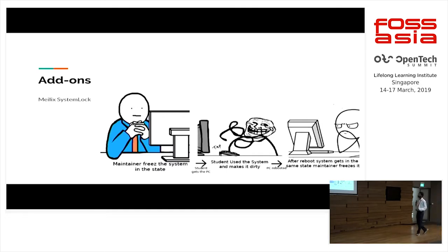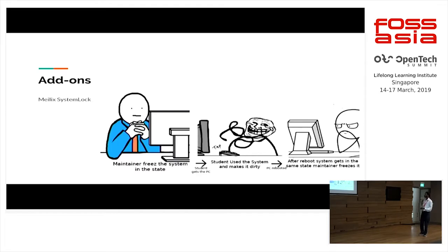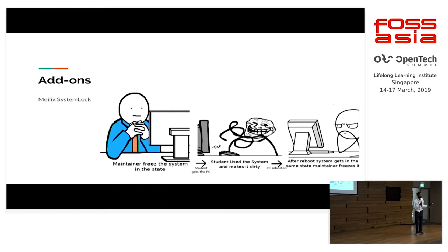Malix System Log solves this. You just need to enable it and let students attend the lab session. After the students leave, just restart the computer. At that instant, it will go straight back to the particular state from when you enabled the system log. All changes made after enabling the system log will be vanished.